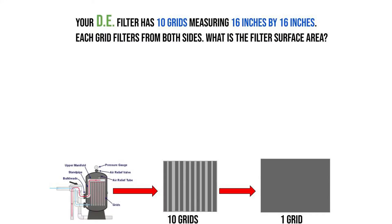Hello, this is Lauren Broom with Space Coast Pool School, your instructor, and today we're going to calculate filter surface area of square diatomaceous earth DE filter grids. So let's go ahead and read our problem. Your DE filter has 10 grids measuring 16 inches by 16 inches. Each grid filters from both sides. What is the filter surface area?